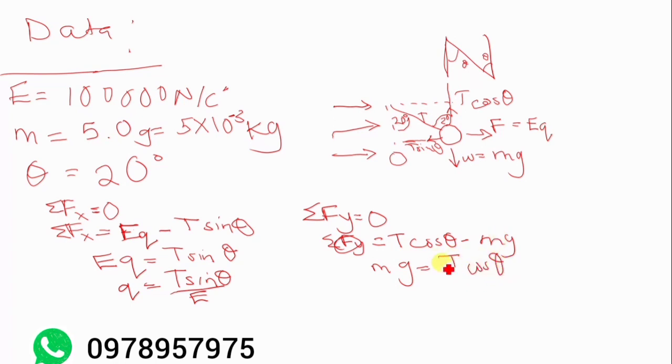Now at this point we can find T because we have theta, we have G, we also have M. So now when we make T subject to the formula by dividing both sides by cosine theta, we're going to have T being equal to mg over cosine theta.